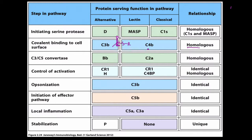For the C3-C5 convertase, in the alternative pathway it is the Factor Bβ subunit as the base part. For the lectin and classical pathways, it's C2α, which seems confusing since alpha is the small fragment. Remember, C2α and Factor B are homologous — they're very, very similar.